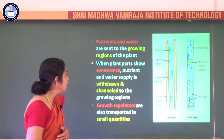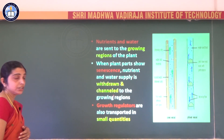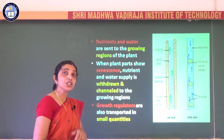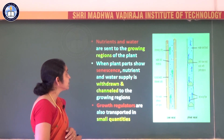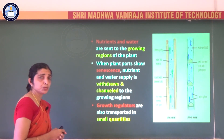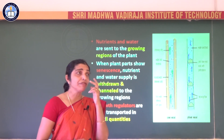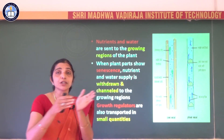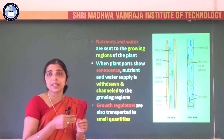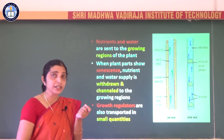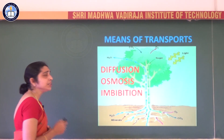When plant parts reach the senescence stage — essentially old age for plants — the nutrient and water supply to those parts is withdrawn and channeled to the growing regions instead. Plant growth regulators are also transported in very small quantities. The phytohormones are synthesized in one region of the plant and move to different parts in minute quantities, since growth hormones are required in very small amounts.